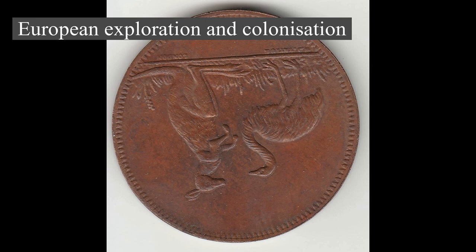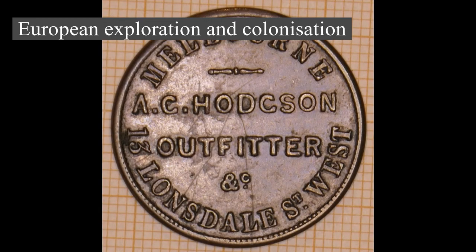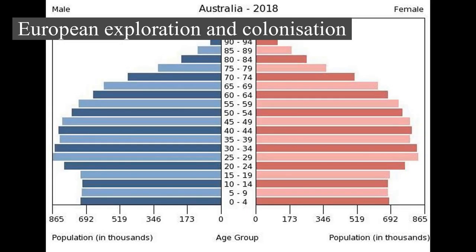The 1808 Rum Rebellion, the only successful armed takeover of government in Australia, instigated a two-year period of military rule. The following decade, social and economic reforms initiated by Governor Lachlan Macquarie saw New South Wales transition from a penal colony to a civil society. The indigenous population declined for 150 years following settlement, mainly due to infectious disease. Thousands more died as a result of frontier conflict with settlers.